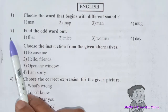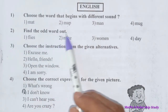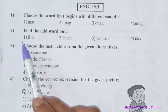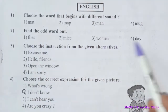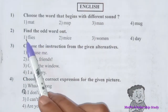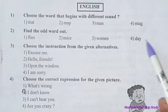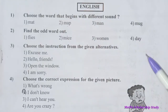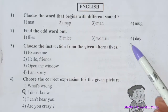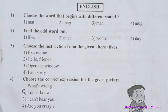Question number two: Find the odd one out. Options are: flies, mice, women, they. Flies, mice, and women are plural words, and 'they' is a singular word here. So option number four is the correct answer.